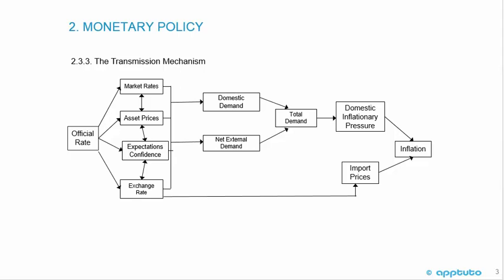Suppose that a central bank announces an increase in its official rate. The implementation of the policy may begin to work through the economy via four interrelated channels — they're not independent, they're interrelated. The four interrelated channels are market rates, asset prices, expectations and confidence, and the exchange rate.